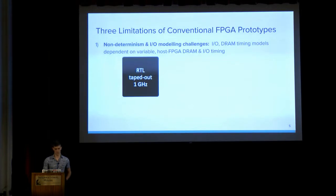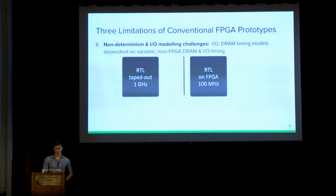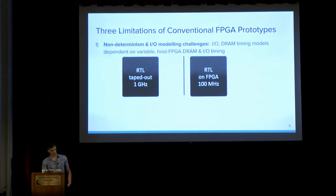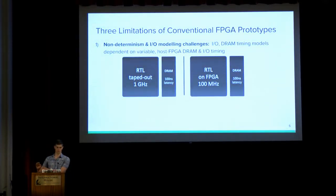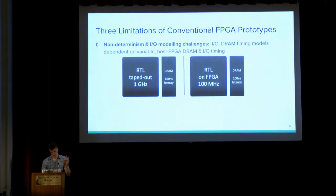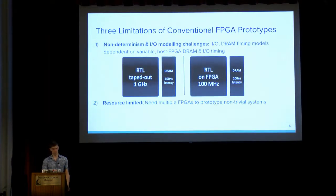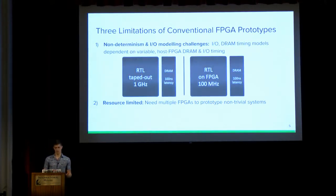For instance, if you take Rocket Chip and tape it out, it might close timing at 1 GHz. If you take the same RTL and synthesize it into LUTs, it may only close timing at 100 MHz. But the DRAM subsystem on your target and on the host FPGA might be of similar speed, so your prototype — unless you perform some trick — is going to see a DRAM subsystem that is 10 times faster.